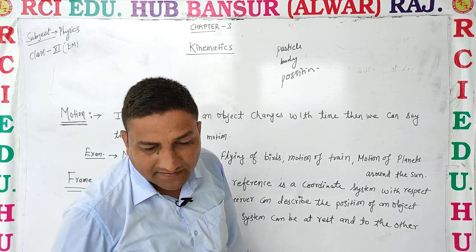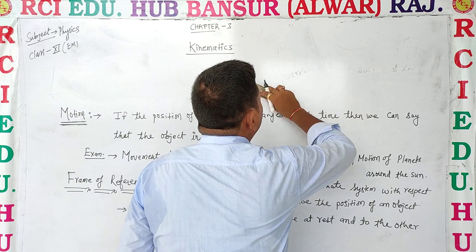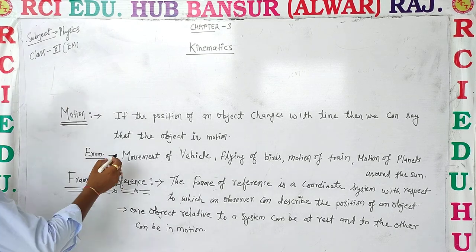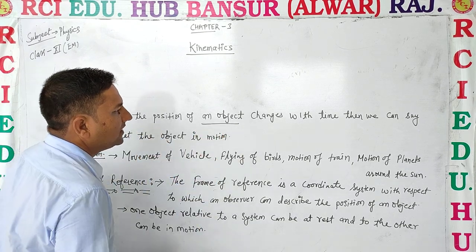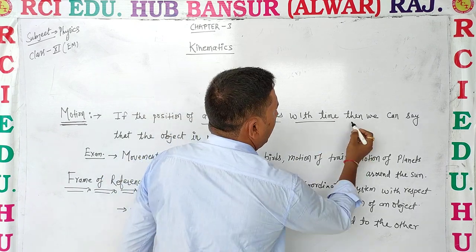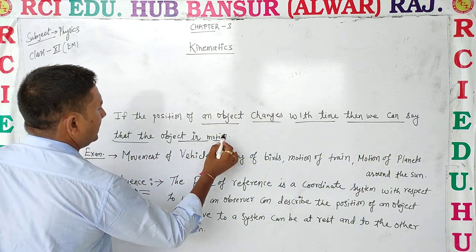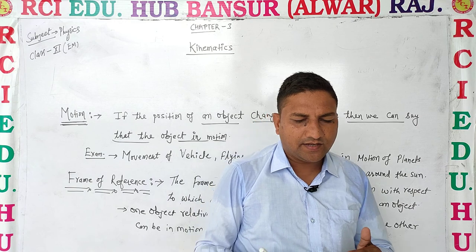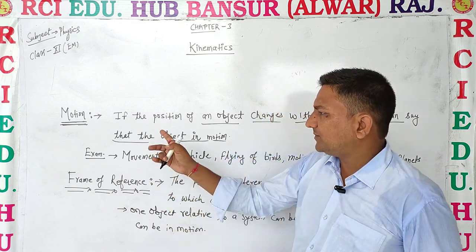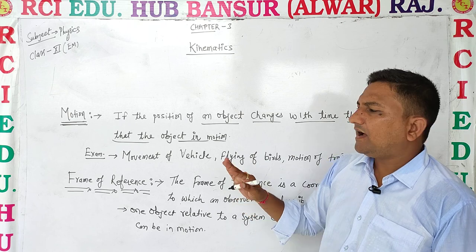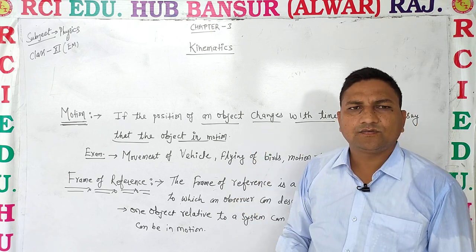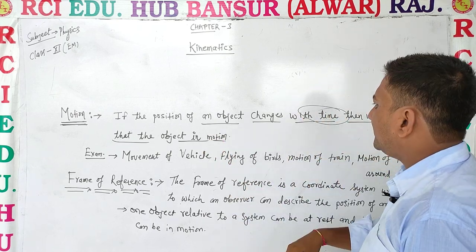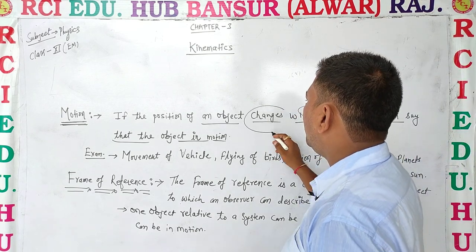When the position of an object changes with respect to time in any respect, then we can say that the object is in motion. If position does not change with respect to time, the object is static.